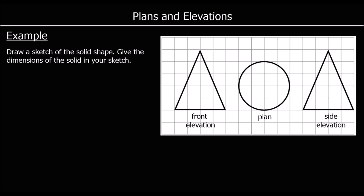We can see that the plan is a circle with a diameter of 4 centimetres. From the side, it looks like a triangle — again 4 centimetres at the bottom and it goes up 5 centimetres. So we have a cone.